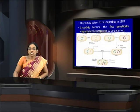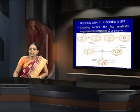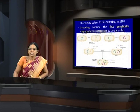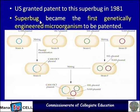The US granted a patent to this superbug in 1981, and it became the first genetically engineered microorganism in the world. The credit goes to Chakravarti et al., who identified this superbug by manipulating many plasmids.